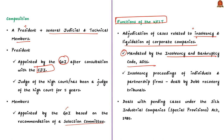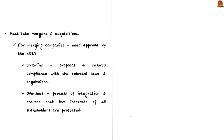The members of the tribunal are appointed by the central government based on the recommendation of a selection committee. Now let us see the functions of NCLT. Firstly, NCLT adjudicates cases related to insolvency and liquidation of corporate companies under the Insolvency and Bankruptcy Code 2016. Note that the NCLT deals with insolvency of only corporates under the code. In the case of insolvency of individuals and partnerships, it will be dealt with by the Debt Recovery Tribunal.